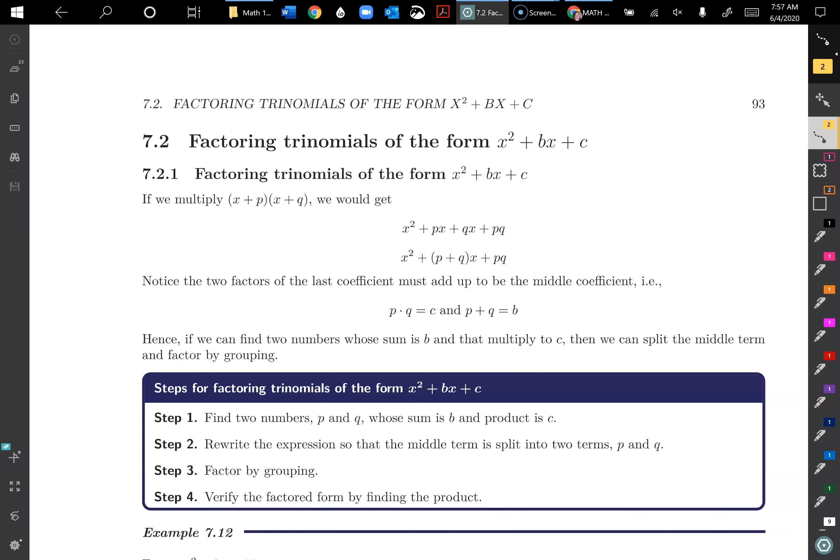When you multiply out two binomials, we have this middle term. Remember we have our first, our outside, inside, and our last, right? So the outside and inside end up being both x terms so that we can add them together. So what we want to do is when we have it in the form like this, with them already added together, we want to figure out how to split it back apart. And then we can use our factor by grouping method or the box method to figure out the binomials that we would need to multiply together that created that trinomial.